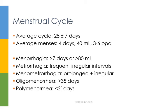Now we'll be talking about the menstrual cycle. By this point in your education, you've probably relearned the menstrual cycle about 5 times, but it's always good to get some review. The average length of the menstrual cycle is about 28 days, and this is what we'll be using for our ideal cycle. On average, menses lasts for 4 days, and about 40 milliliters of blood is lost, and you use about 3 to 6 pads per day.